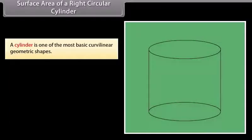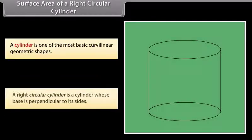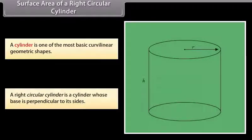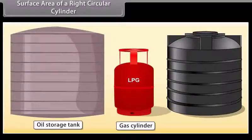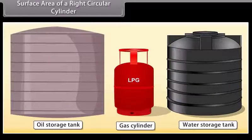Surface area of a right circular cylinder. A cylinder is one of the most basic curvilinear geometric shapes. A right circular cylinder is a cylinder whose base is perpendicular to its sides. Common examples include gas cylinders, oil storage tanks, and water storage tanks.